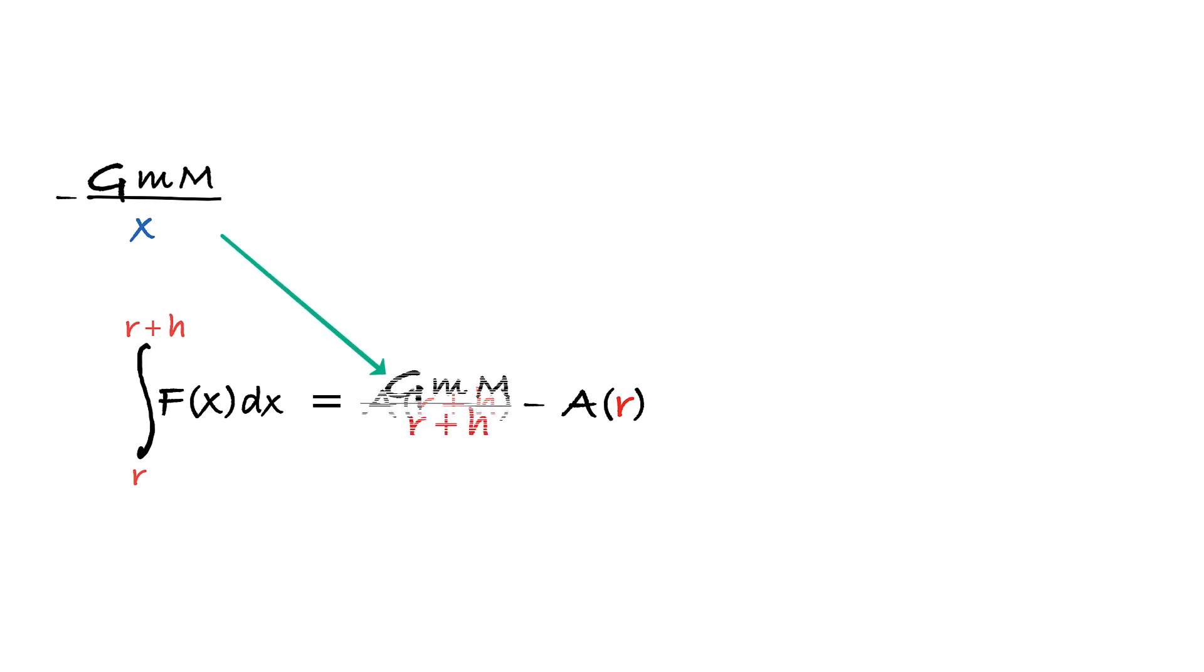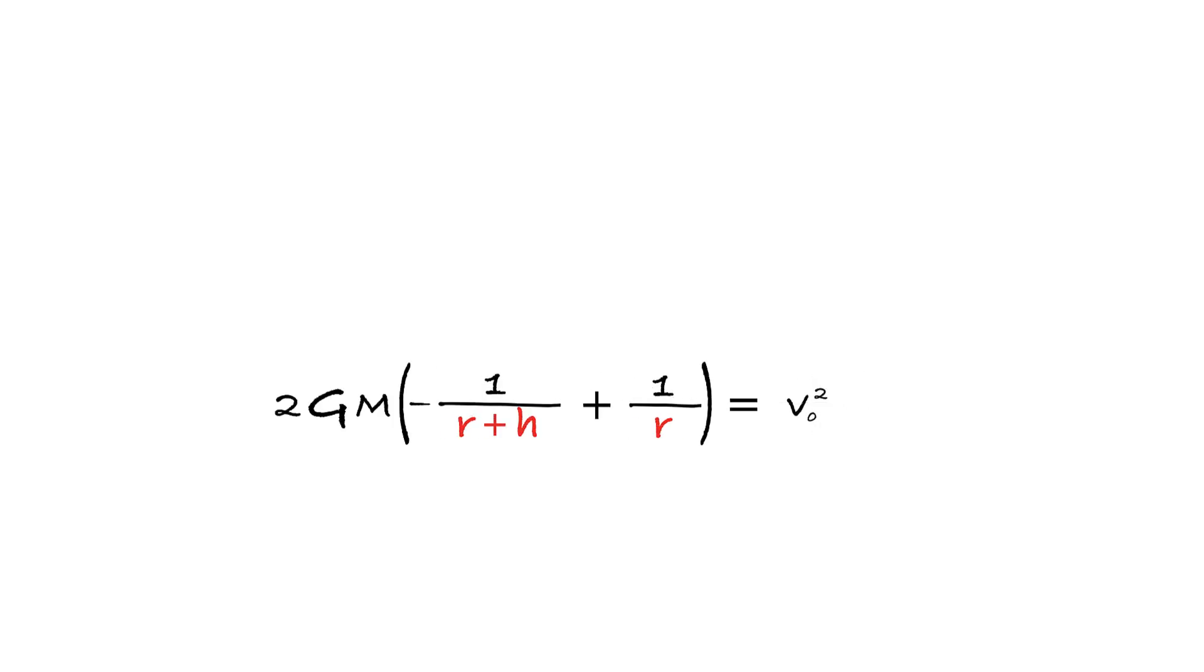We can now calculate the integral. But that, as we remember, must equal our kinetic energy, which is right here. Well, small m now obviously cancels out and we can determine the velocity that is required in order to elevate the rock to height h.